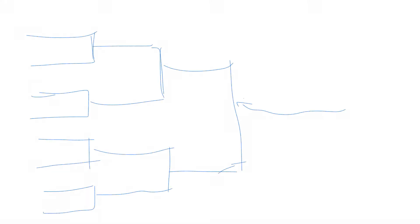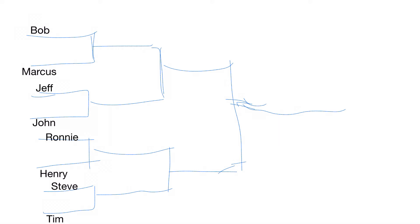Knockout tournaments are exactly what they sound like: a game can knock a player out of the tournament, and the winner goes on to the next round while players are eliminated along the way. Here's a potential diagram with random names — Bob, Marcus, Jeff, John, Ronnie, Henry, Steve, and Tim. Bob and Marcus play each other, Jeff and John match up, Ronnie and Henry, and so on. After each match, winners move up and face another opponent. More and more people are knocked out until the finals, where two players face each other — in this case John and Tim. The winner is determined by whoever wins the game.